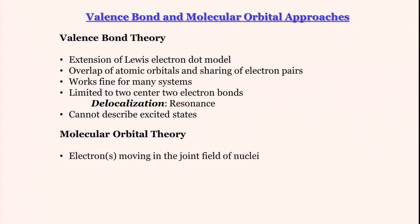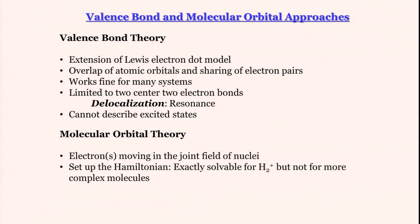In this theory, we consider the electrons to move in the joint field of nuclei. Setting up Hamiltonian is there in valence bond as well as molecular orbital theory. For MOT it turns out that the Schrodinger equation is exactly solvable for H2+, but not for more complex molecules.